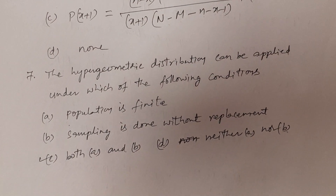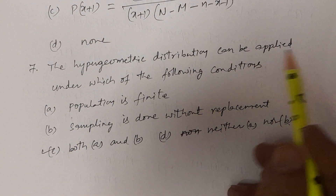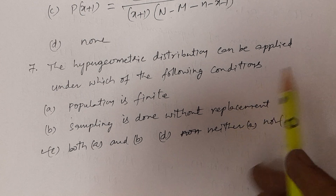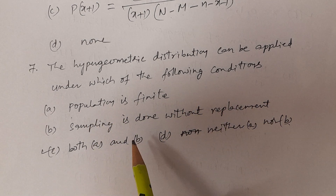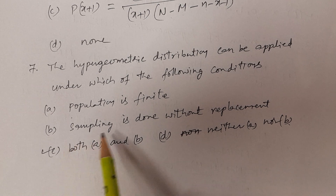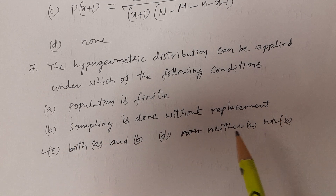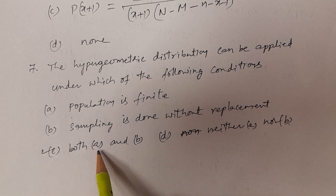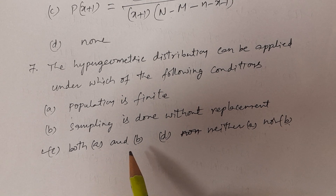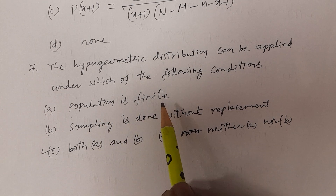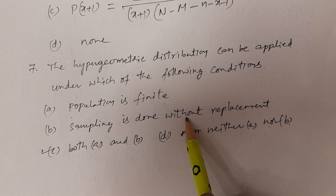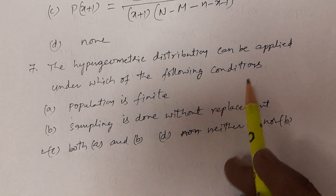Question number seven: The hypergeometric distribution can be applied under which of the following conditions? Option A: Population is finite — that's right. Option B: Sampling is done without replacement — this is also right. Option C: Both A and B — that is correct. Option D: Neither A nor B — no. The answer is both A and B. Population should be finite, and sampling is done without replacement.